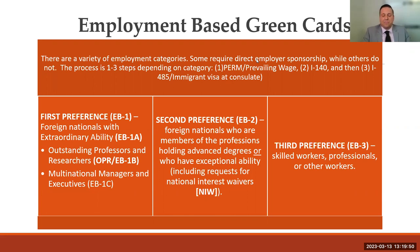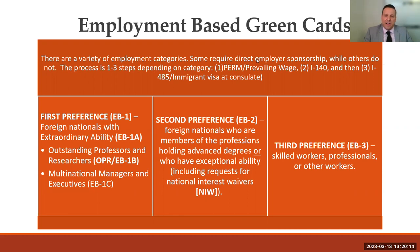The second preference employment-based category covers professionals with a master's degree or a bachelor's plus five years, and also includes exceptional ability, which encompasses the National Interest Waiver, or NIW. The NIW is a self-sponsored green card category, very common for postdocs and researchers who say they're going to file their EB-2 NIW. The third preference category covers bachelor's level positions — for example, a university might sponsor a bioinformatics specialist with a unique skill set. Each of these categories has different requirements and a different place in line.